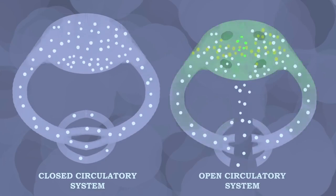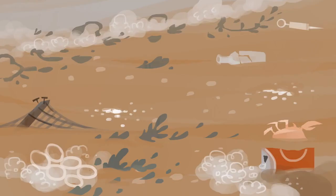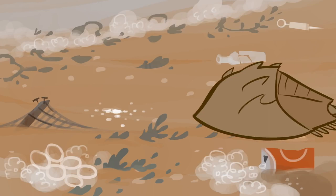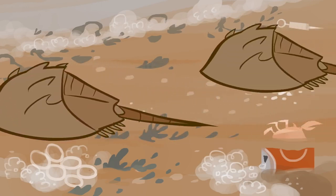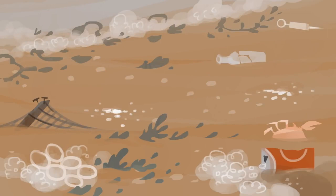If bacteria enters their blood, it can quickly spread over a large area. Pair this vulnerability with the horseshoe crab's bacteria-filled ocean and shoreline habitats, and it's easy to see why they need such a sensitive immune response.